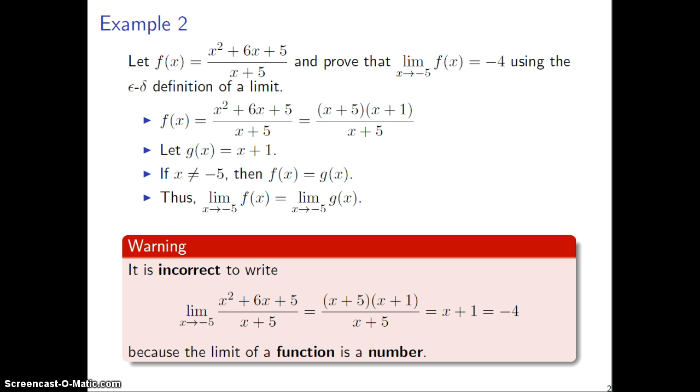Now what we're going to need to do in both the discovery phase and the proof phase is actually make use of this function g here. So keep this function in mind, maybe write this down along with f, and also this fact that if x is not equal to negative 5, then f is equal to g. We're going to use that on both the discovery phase and the proof phase.